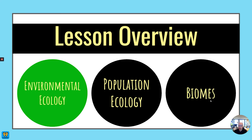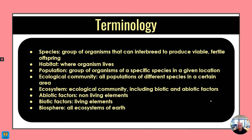So first let's talk about environmental ecology. Here's some of the terminology that you're going to need to know for this section. A species is a group of organisms that can interbreed to produce viable fertile offspring. This is important — it needs to be able to continue the species.